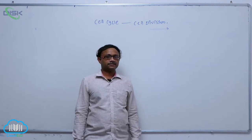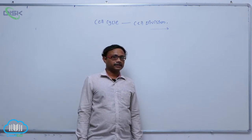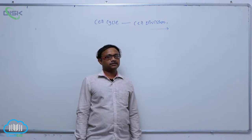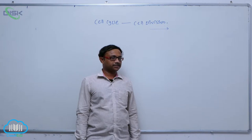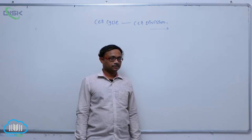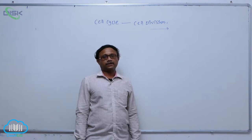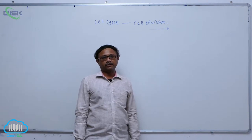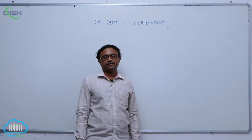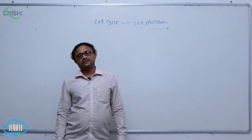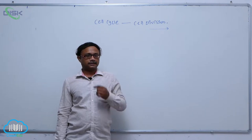In the S phase, DNA undergoes replication, producing daughter DNA molecules. In this process, the chromosome number is not changed, but the DNA amount per cell is doubled. That is why it is known as the synthesis phase.